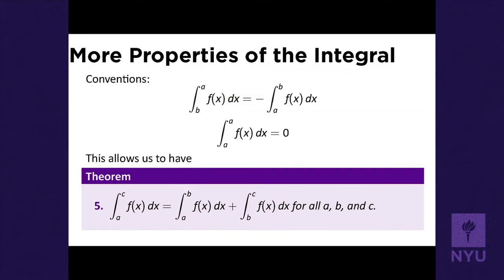With conventions about integrating in the reverse direction, integrating backwards gives the negative of the forward integral, and integrating over an interval with no width is zero. This gives us the property: if I want to integrate from A to C, I can integrate from A to B and add the integral from B to C.